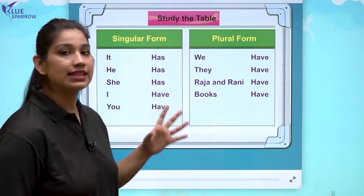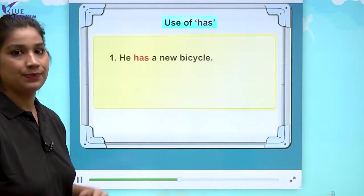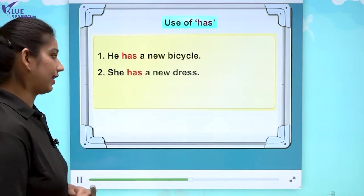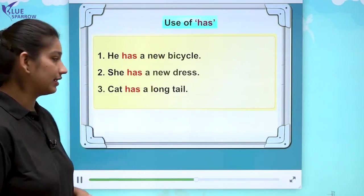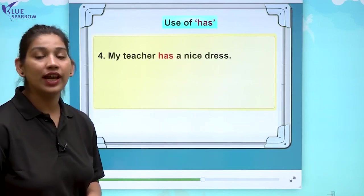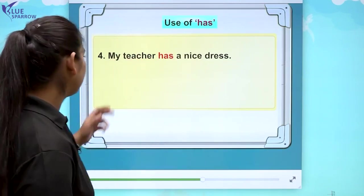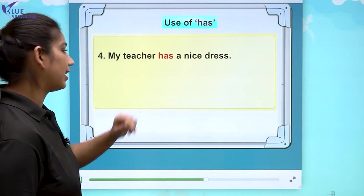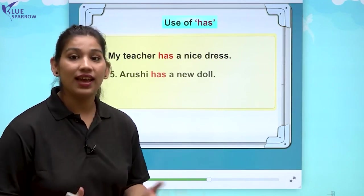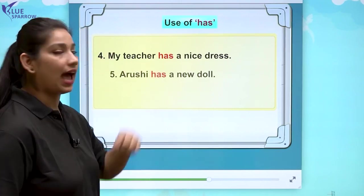Let us understand the use of has and have through sentences. First, the use of has. He has a new bicycle — uske paas ek new bicycle hai. He has a new dress. Cat has a long tail — cat ki long tail hoti hai. Cat ek singular hai, one in number hai, isliye ham ne cat ke saath has lagaya hai. My teacher has a nice dress — meri teacher ke paas ek nice dress hai. Teacher is singular in form, that's why we used has with teacher.